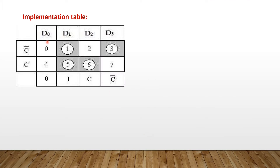Here is the implementation table. With three variables there are 8 minterms, from 0 to 7. Using the 4 to 1 multiplexer, we have 4 inputs: d0, d1, d2, d3. The last variable is C, so the first row represents C bar and the second row represents C. Following the three conditions: in the first column both minterms are not circled, so d0 = 0. In the second column both minterms are circled, so d1 = 1. In the third column the bottom minterm is circled, so d2 = C. In the last column the top minterm is circled, so d3 = C bar.